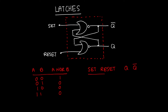We're going to go over all possible combinations, but not in order — and you'll see the reason for that. I'm going to start with the condition where set is high and reset is low. Just looking at the naming conventions of the inputs, when set is high and reset is low, that's the condition for setting the latch, which should mean that Q is high and Q-bar is low, because Q-bar is always the complement of Q. Let's see if that is true.